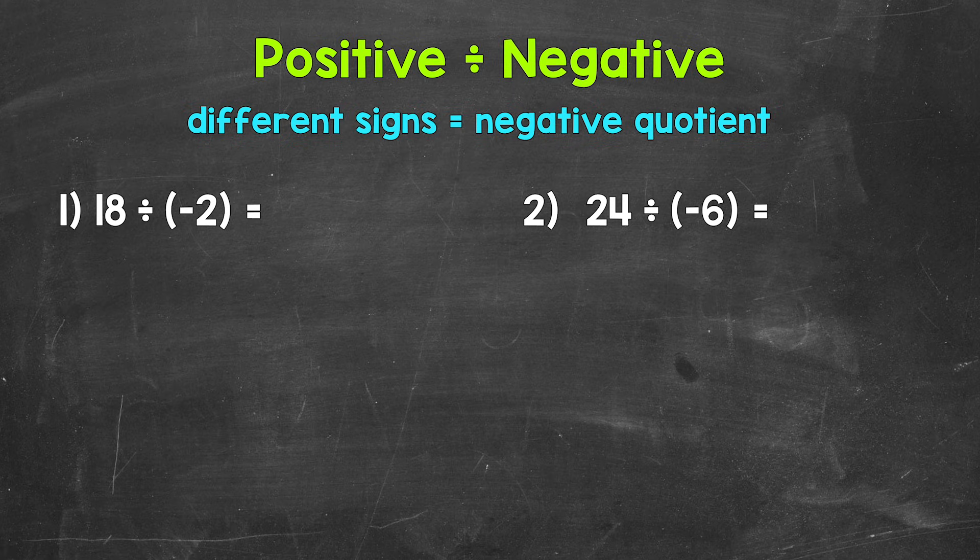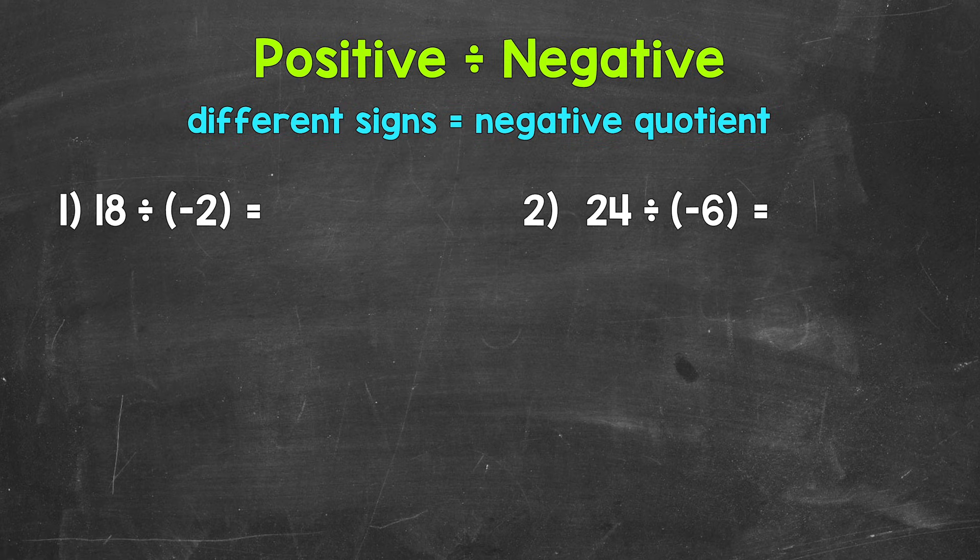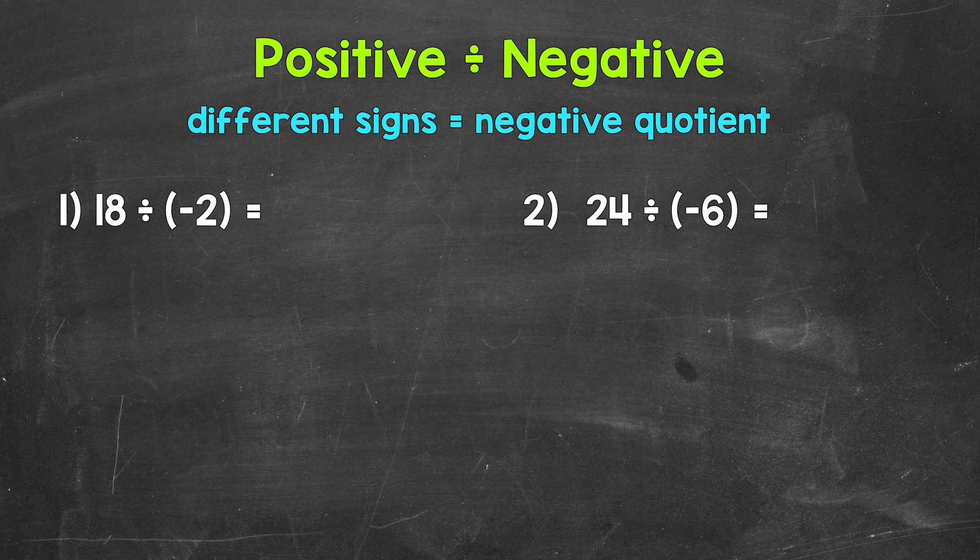Let's jump into number 1 where we have 18 divided by negative 2. With this being a positive divided by a negative, we have different signs. This means our quotient, the answer to a division problem, will be negative.